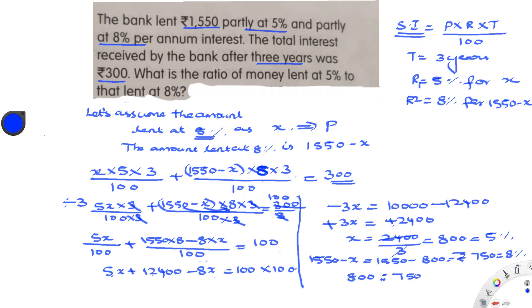Now we need to find the ratio of 800 to 750. Simplifying by cancelling zeros and dividing both by 50, we get 16 and 15. So the ratio is 16 : 15.